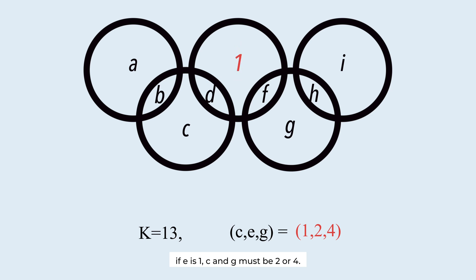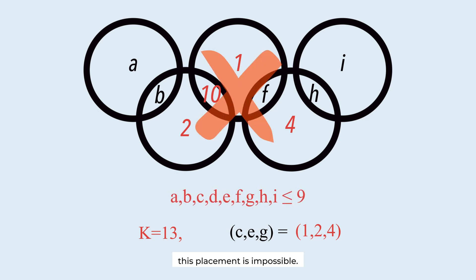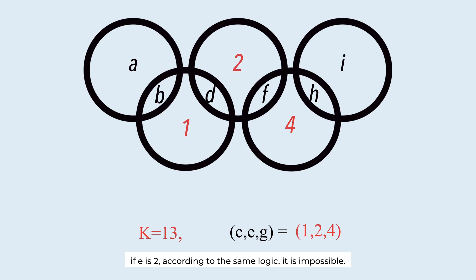If E is 1, C and G must be 2 or 4. However, in order for the sum of this line to be 13, this number must be 10. Since the maximum number is 9, this placement is impossible. If E is 2, according to the same logic, it is impossible. Thus, E must be 4.